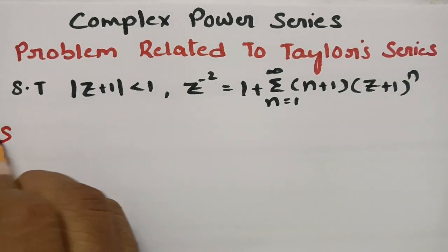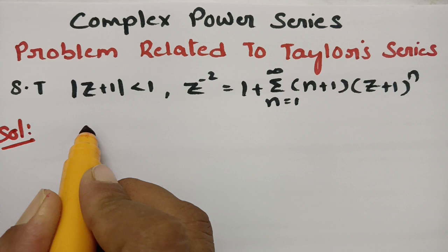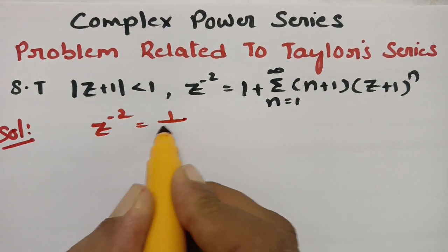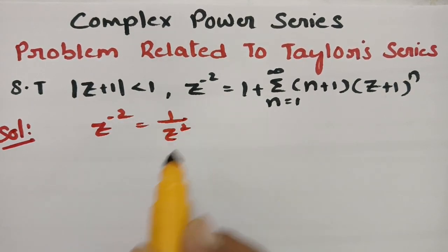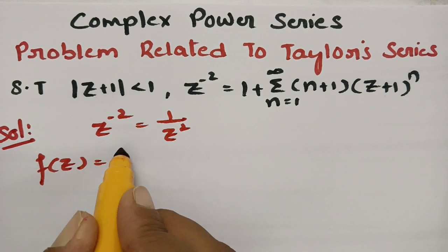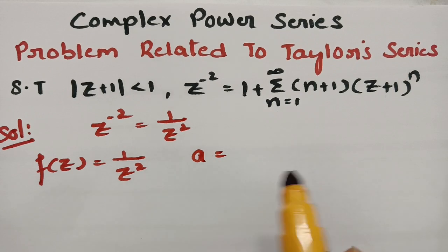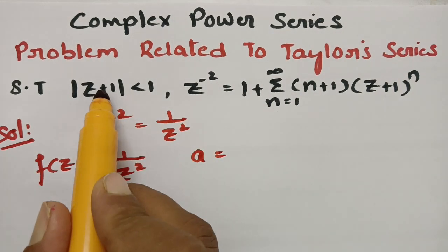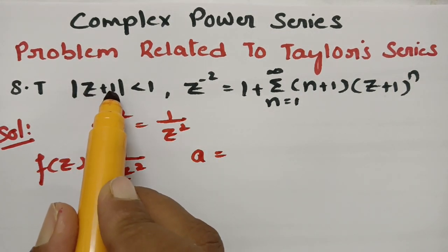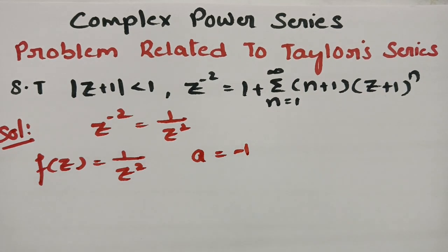In the solution, it is very clear that z to the power minus 2 can be written as 1 by z squared. So our f(z) value is nothing but 1/z², and this can be written as z minus of minus 1, and therefore our center point here is a = minus 1.